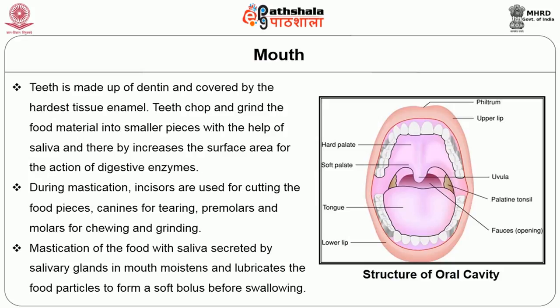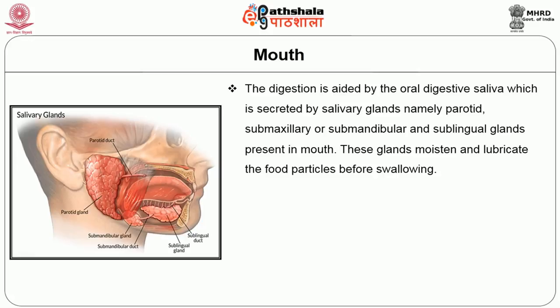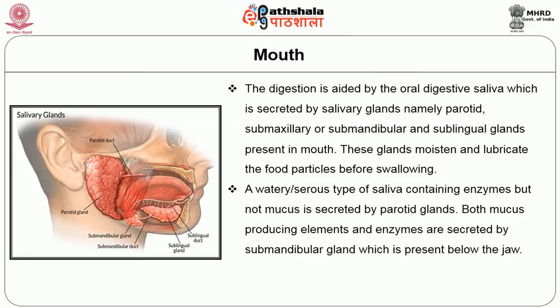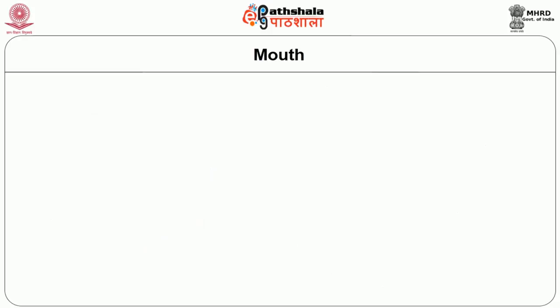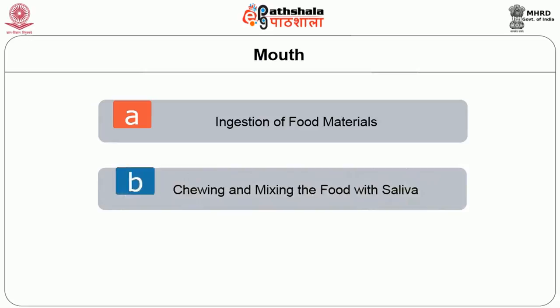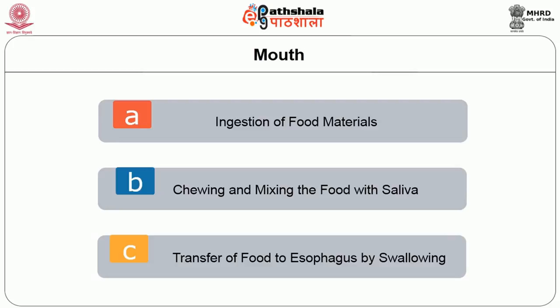Digestion is aided by the oral digestive saliva secreted by the salivary glands, namely the parotid, submaxillary or submandibular, and sublingual glands present in the mouth. A watery or serous type of saliva containing enzymes but not mucus is secreted by the parotid glands. Both mucus-producing elements and enzymes are secreted by the submandibular gland, located below the jaw. The sublingual gland, located underneath the tongue, produces only the mucus type of saliva. Thus, the main functions of the mouth are ingestion of food materials, chewing and mixing of food with saliva, and transfer of food to the esophagus by swallowing.